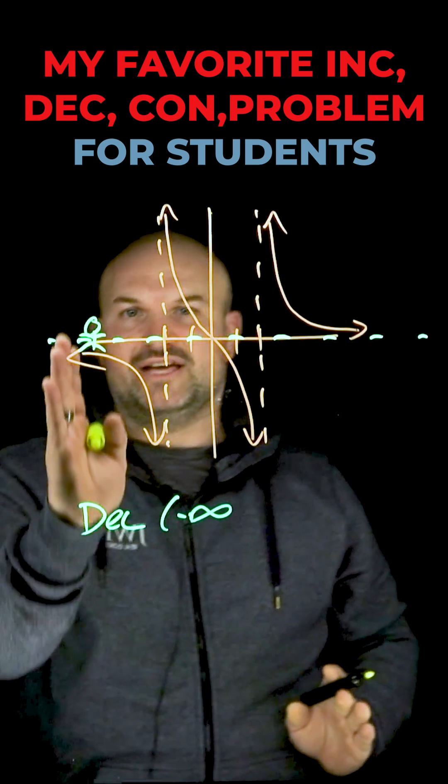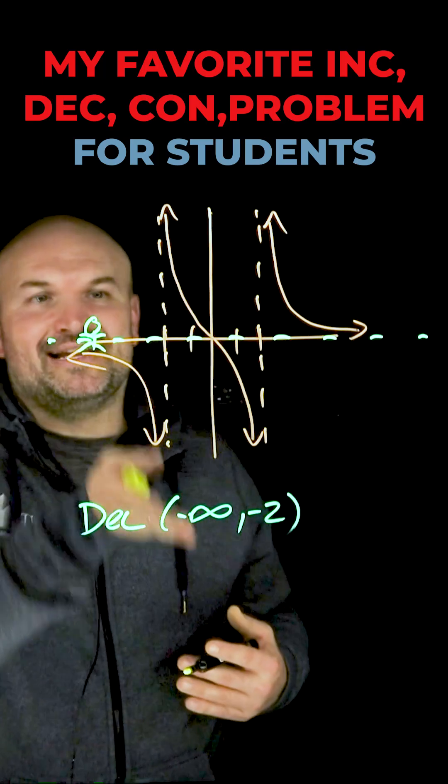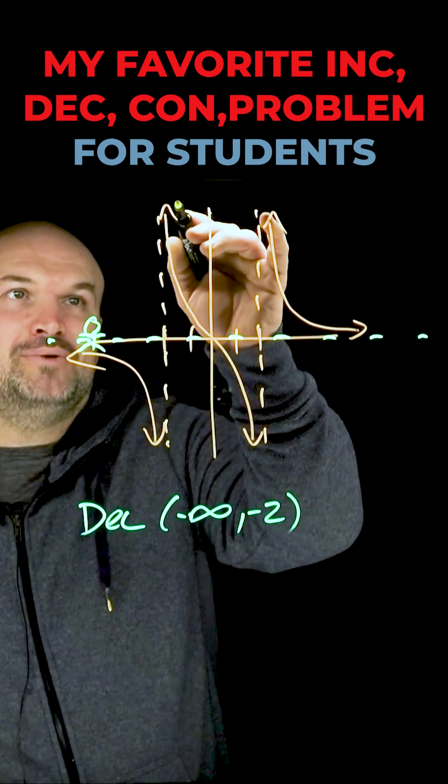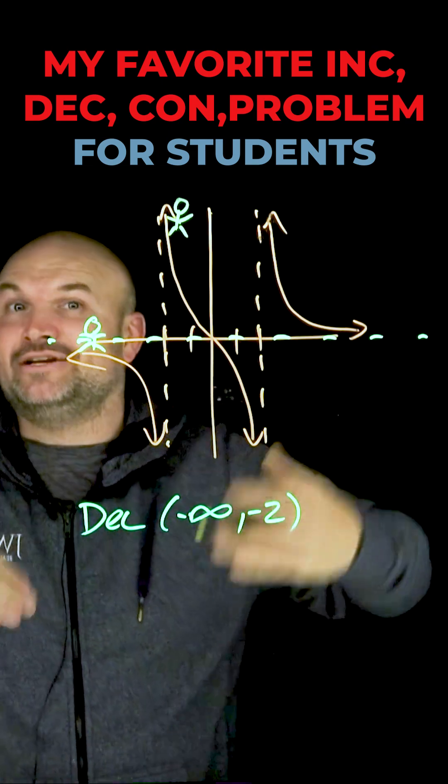So the x value where my graph is declining is from negative infinity to negative two. And then here's the weird thing - after negative two, that's an undefined value, you have to hop right back up here. So how do you go from down here to up here without having an increasing interval?